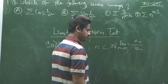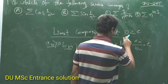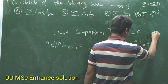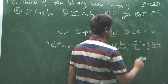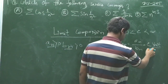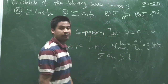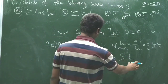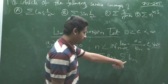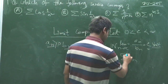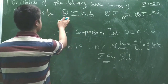...of aₙ/bₙ equals some value c, where c is greater than 0 and less than infinity — that is, c must be a positive finite number — then the behavior of the series Σaₙ and Σbₙ are the same. If one is convergent, the other is also convergent, and if one is divergent, the other is also divergent.